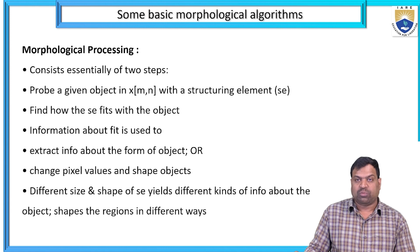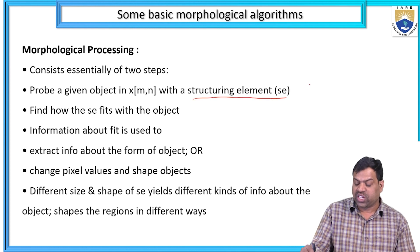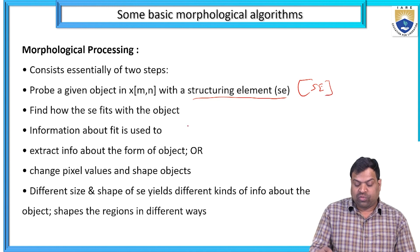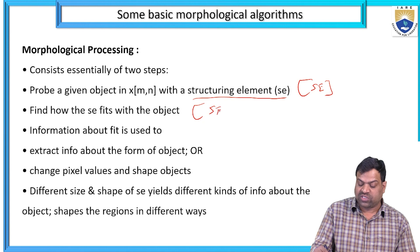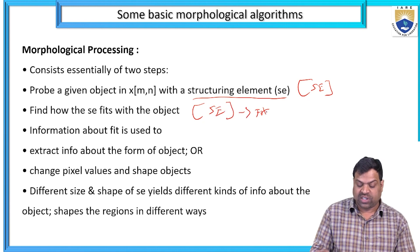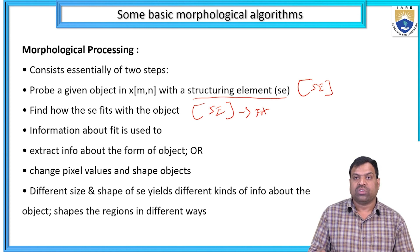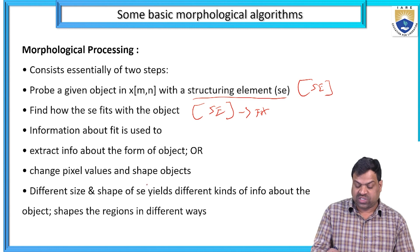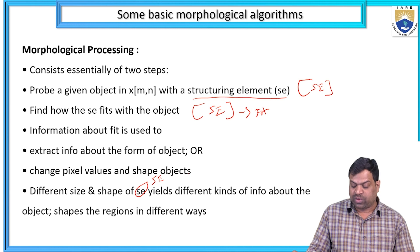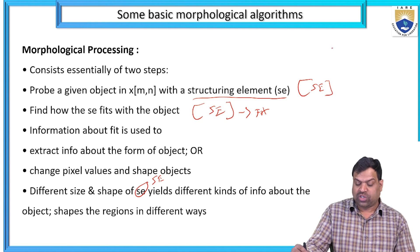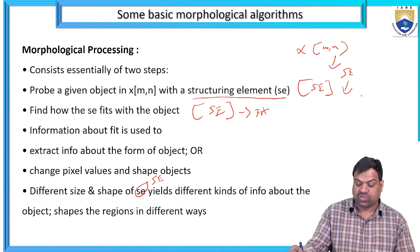Morphological processing consists of two essential steps. First, a probe is given to an object at position x(m,n) with a structuring element SE, and we find how the SE fits with the object. The information about fit is used to extract information about the form of the object, or to change pixel values and shape objects. Different size and shape of SE yields different kinds of information about the object shapes and regions in different ways.